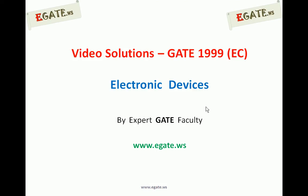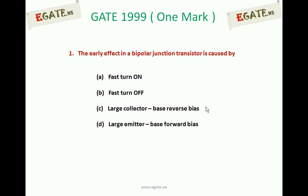Hello, we are discussing the GATE 1999 ECE paper and the topic is electronic devices. This is one more question from GATE 1999. The early effect in a bipolar junction transistor is caused by: A. Fast turn on, B. Fast turn off, C. Large collector base reverse bias, D. Large emitter base forward bias.